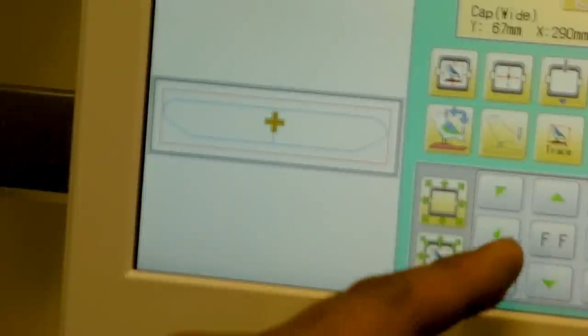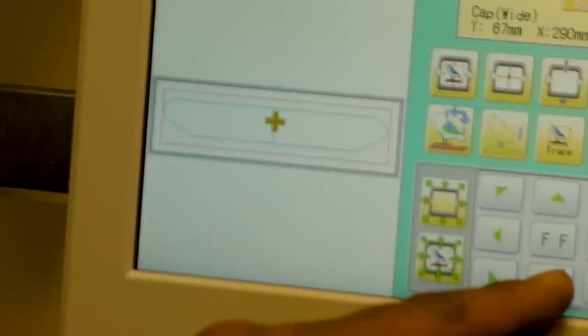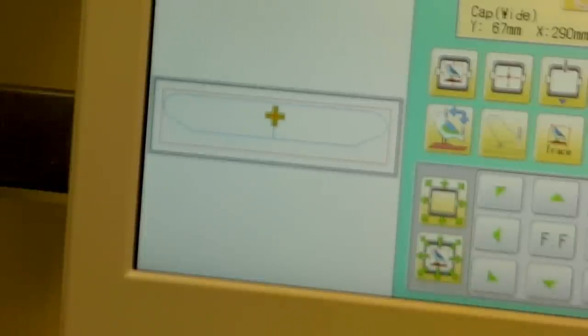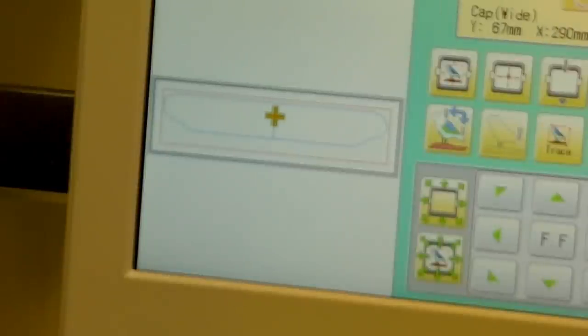And by using the arrow keys, we can simply move that up and down to adjust that sewing position. And you can hear in the background the machine actually moving the arm so that what we're seeing on the screen and the reality of how it's going to sew match at the same time.